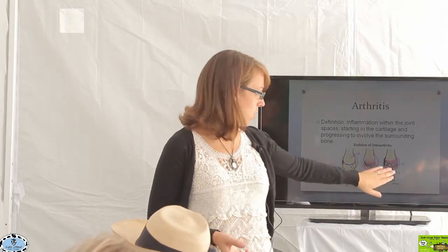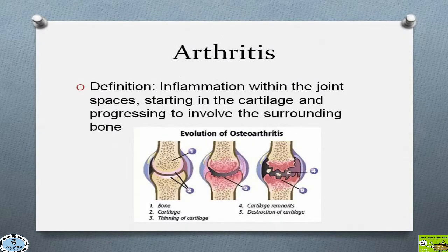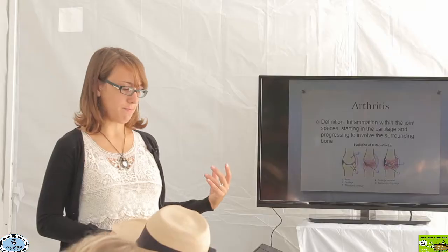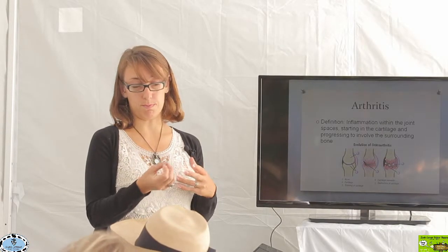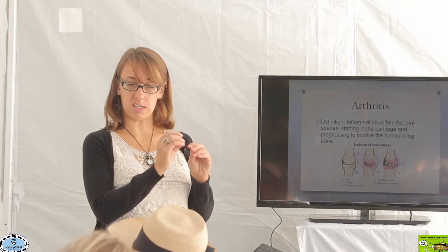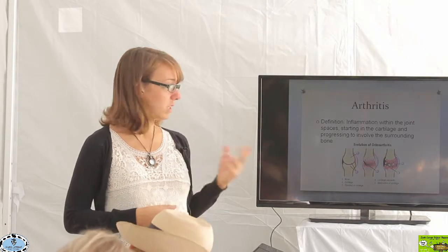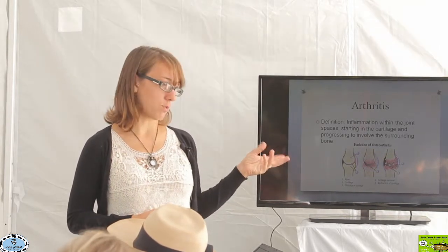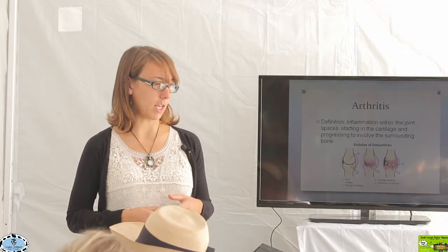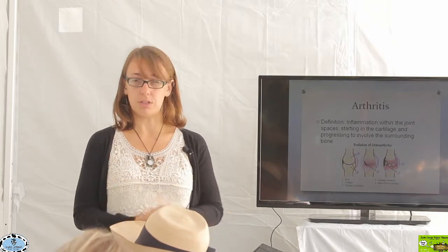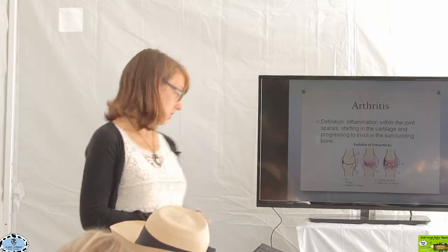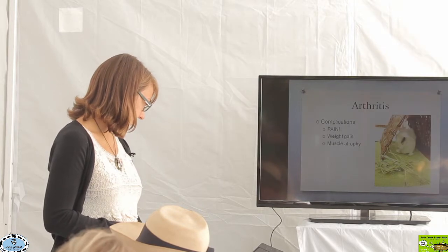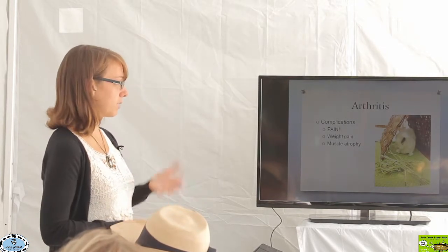As cartilage is worn down, it can reach a severe stage where there's actual loss of cartilage and destruction of bone. You can even see little fragments of cartilage and pieces of bone that ossify in different parts of the joint. These changes significantly limit the animal's ability to move that joint and allow pain to occur.